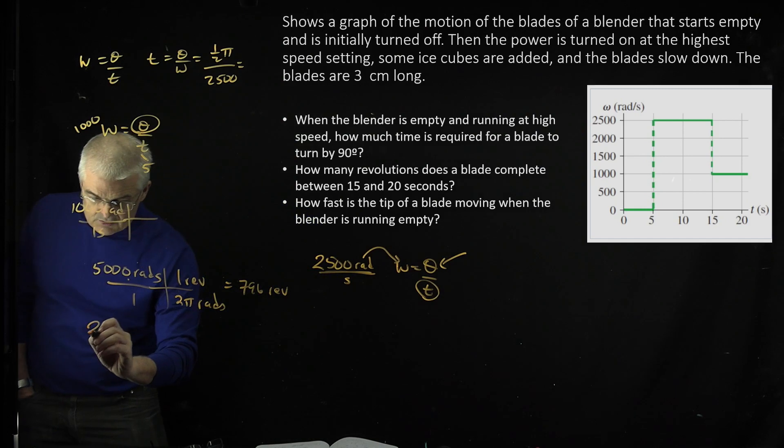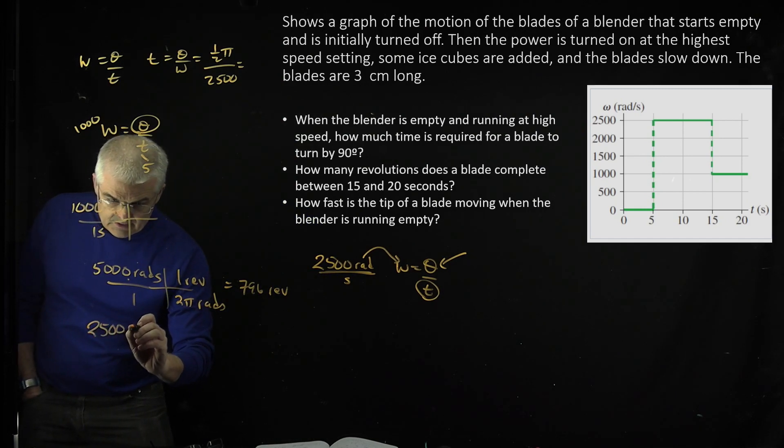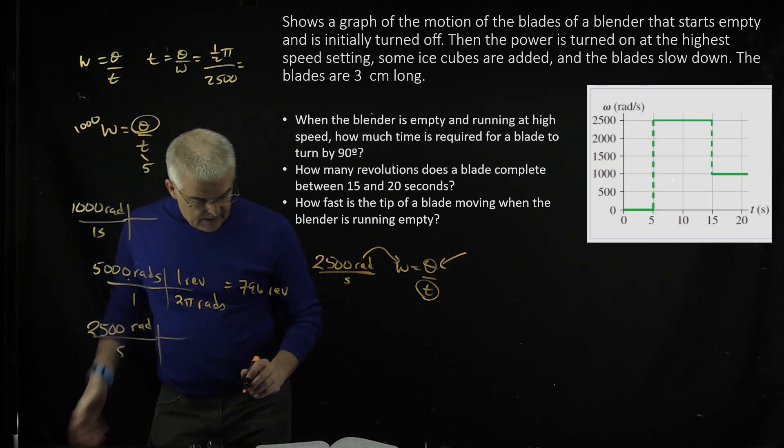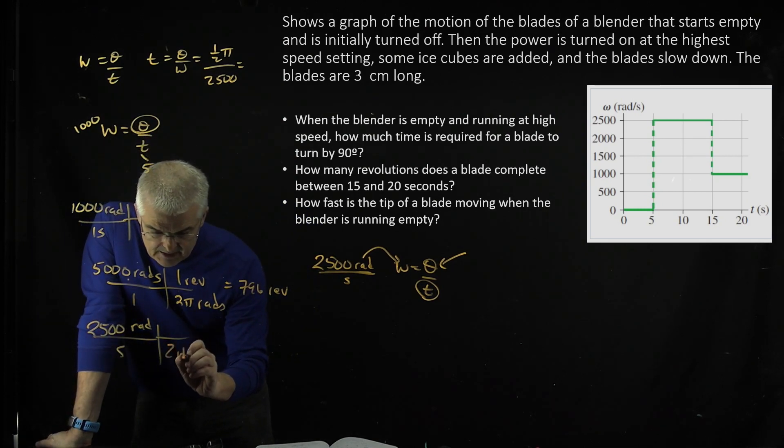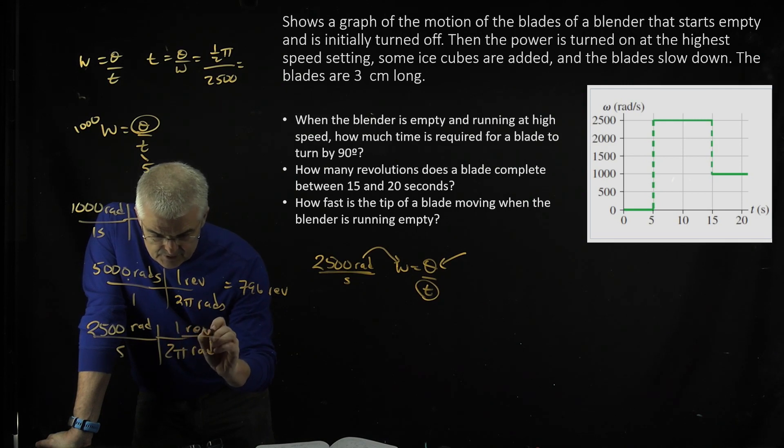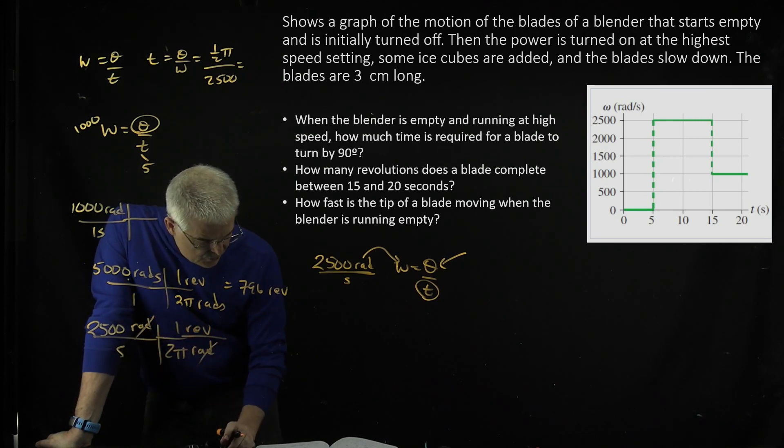I'm going to say 2,500 rad/s. And then I can say 2π rad, again, dimensionally, is equal to 1 revolution. And my rads will cancel. Now I've got revolutions.